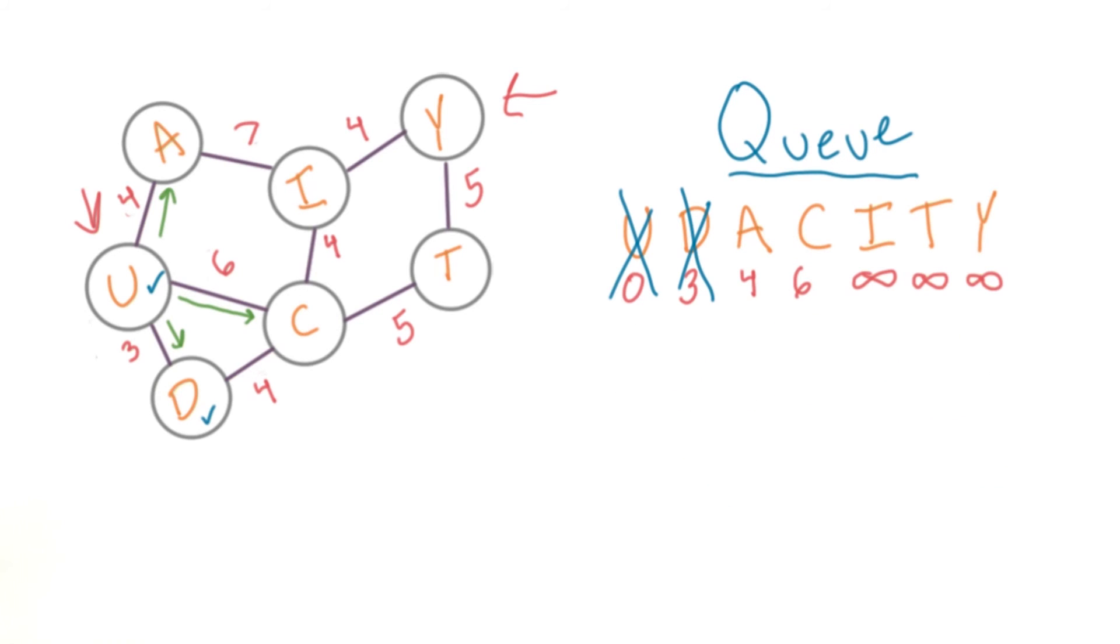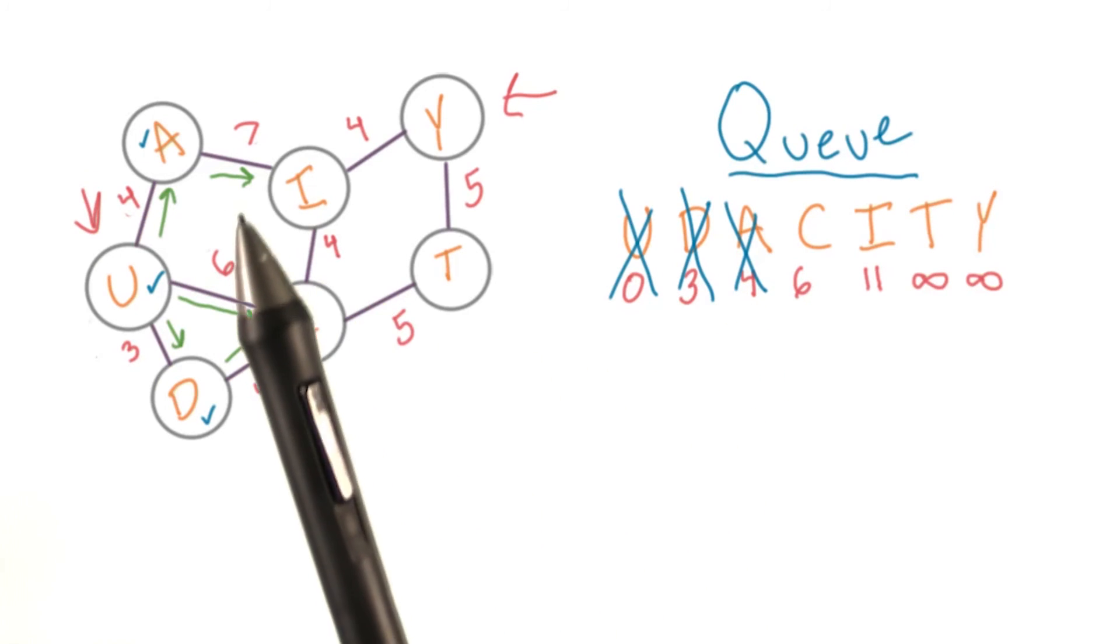We repeat the process, visiting all adjacent nodes that are still in the queue, and updating their distance values if we can decrease it at all. We keep going, extracting the minimum from our queue, and exploring adjacent elements.